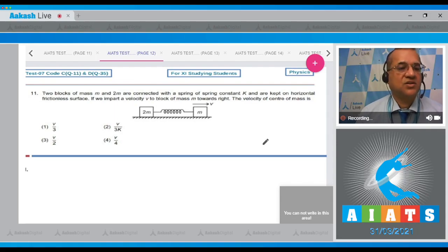Question number 11 says two blocks of mass m and 2m are connected with a spring of spring constant k and are kept on horizontal frictionless surface. If we impart a velocity v to a block of mass small m towards right, then velocity of center of mass.